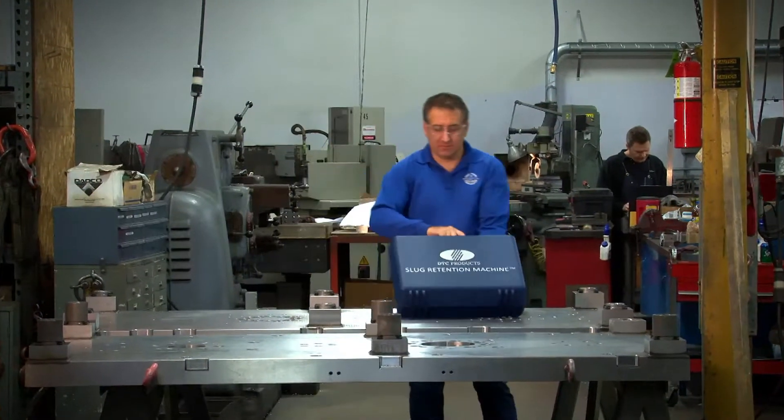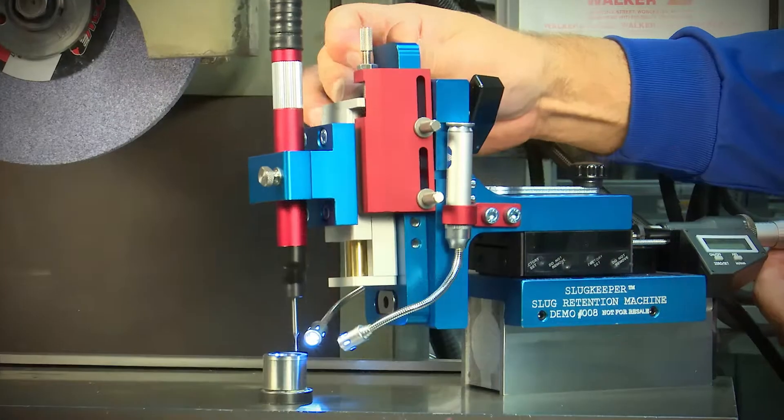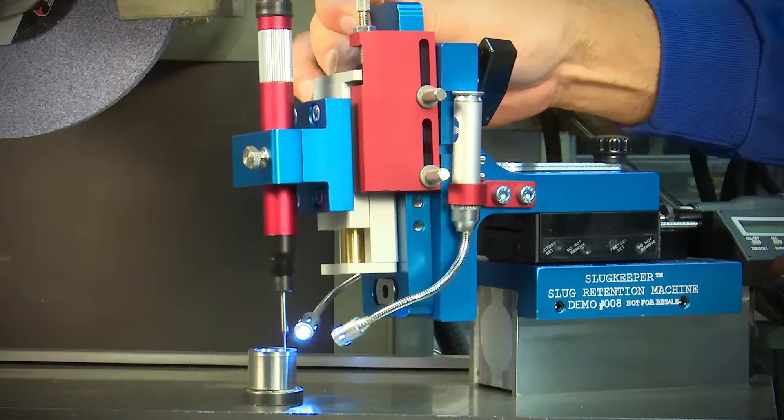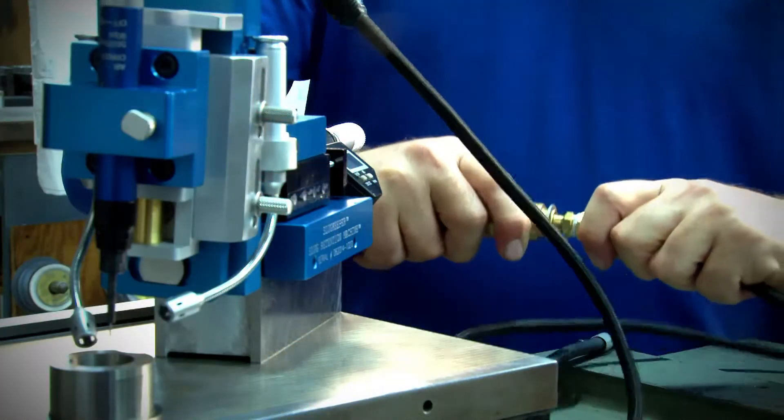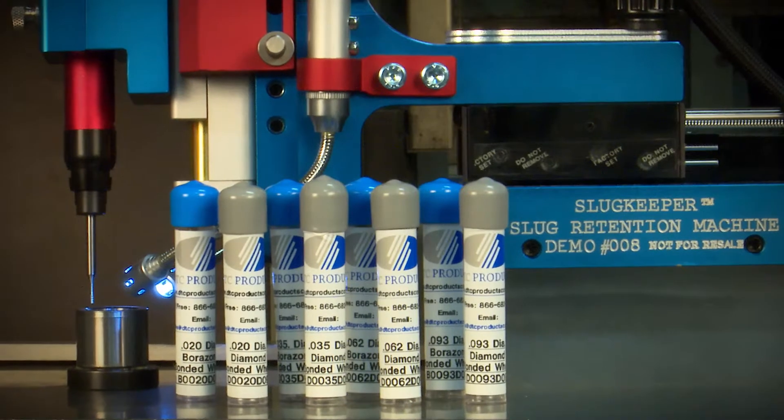Lightweight and portable, the slug keeper can be easily set up and operated by a single person. This unit measures less than 10 inches high, requires only a compressed air connection to operate, and comes with multiple diameter bits and supplementary tools.